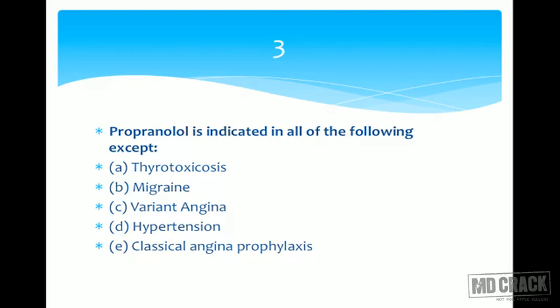We can rule out hypertension since propranolol is an antihypertensive agent. We are left between variant angina and classical angina prophylaxis. For classical angina prophylaxis, beta blockers are always preferred and combined with nitrates for long-term use, so they have great value there.